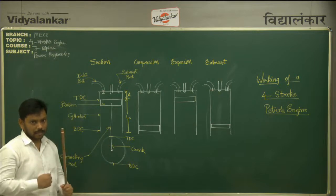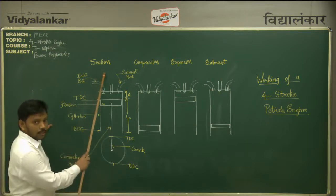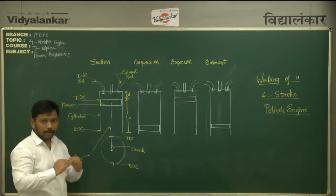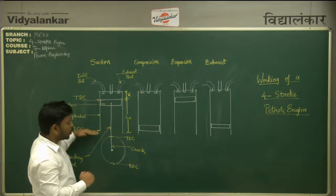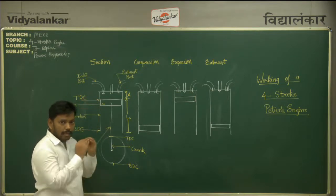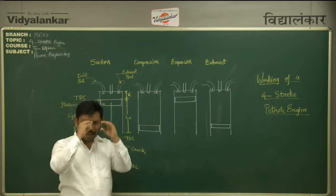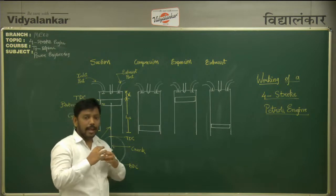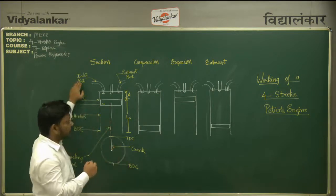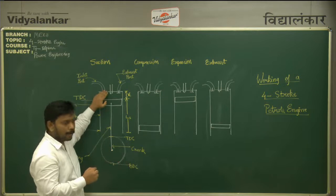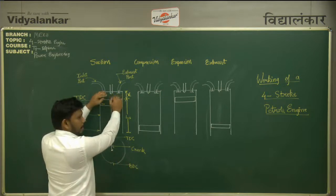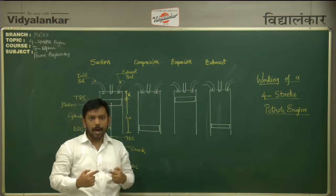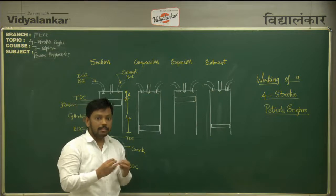There are 4 strokes as the name suggests. Let us focus on the first stroke which is the suction stroke. During the suction stroke, the piston starts moving from the TDC to the BDC — that is from the top dead center to the bottom dead center. While it is moving, it will create a partial vacuum at the head inside the upper part. Because of this partial vacuum, the air-fuel mixture will start entering from the inlet port. The inlet valve will be opened and the mixture will start entering into this region and the piston will start moving down. This way, the first stroke of the IC engine — the suction stroke — has been completed.